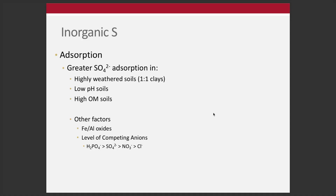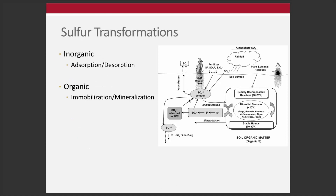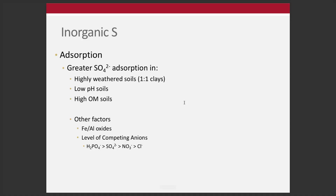Highly weathered, one-to-one clay soils with low pH, even high organic matter soils, can have a lot of cycling through adsorption from mineralization and then release into soil solution. There are a lot of interactions between the sulfate ion and iron and aluminum oxides — similar to what we discussed with phosphorus. This plays a smaller role in Ohio soils; in more tropical soils, we would see much greater significance in terms of overall cycling.